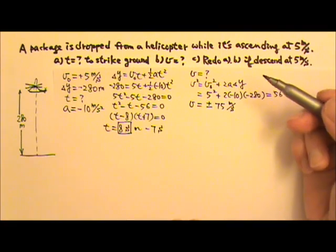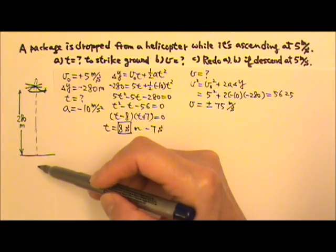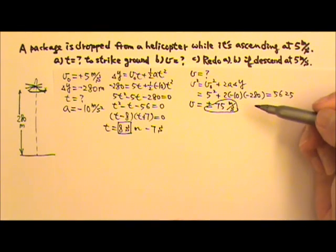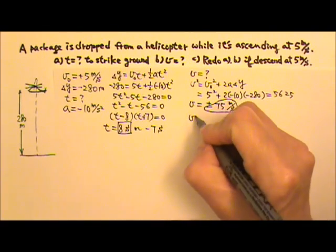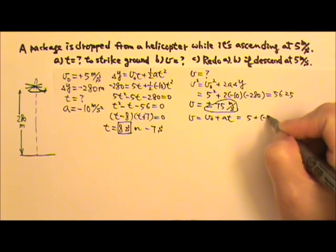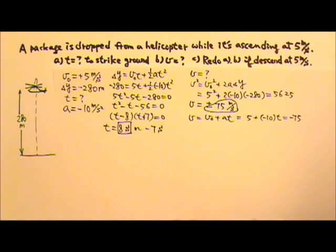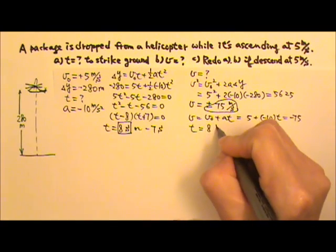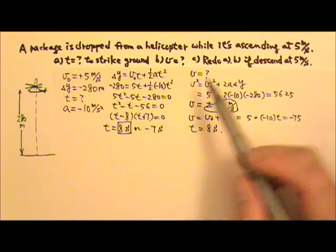Right before it hits the ground, the velocity is downward, so the answer is negative 75 meters per second. Then you can use this to find the time with v equals v₀ plus at: negative 75 equals 5 plus negative 10 times t, which gives the time of 8 seconds. So if you want to avoid the quadratic equation, that's the approach.